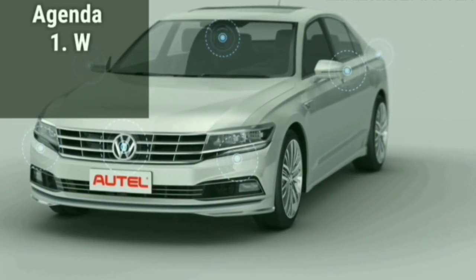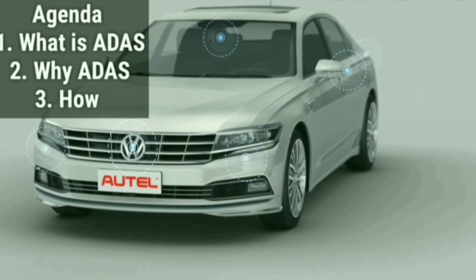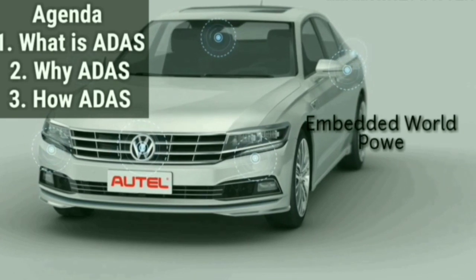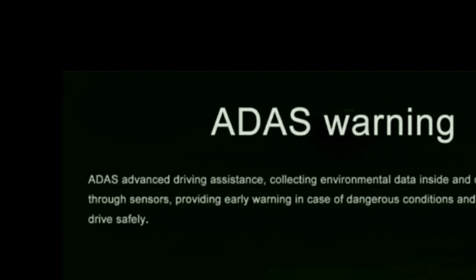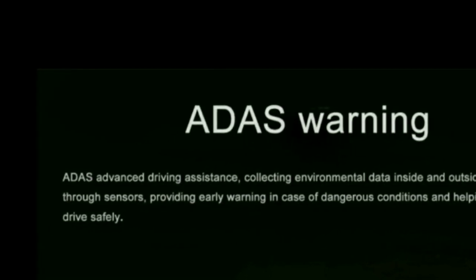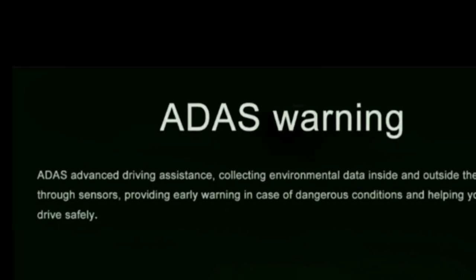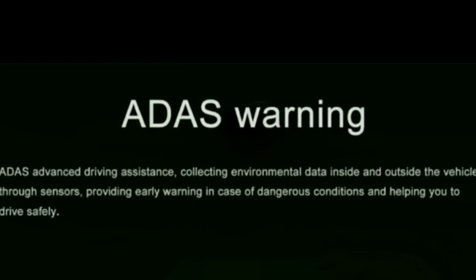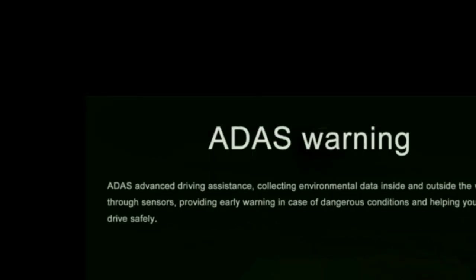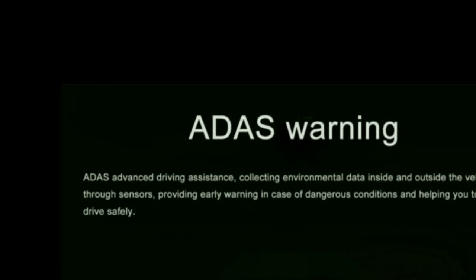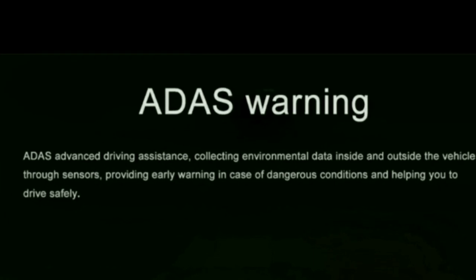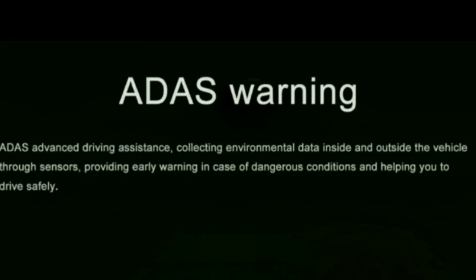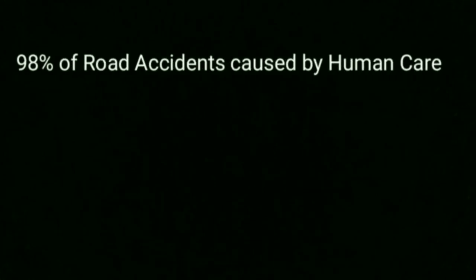In this tutorial, the agenda is: what is ADAS, why ADAS, and how ADAS works. ADAS means Advanced Driver Assistance System, which plays two significant roles: providing warnings to the driver, and taking control of the vehicle. ADAS collects data from inside and outside the vehicle through many sensors, and either provides a warning to the driver or takes control of the vehicle.